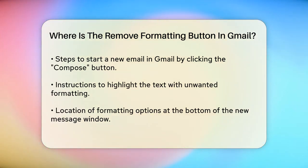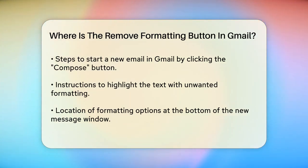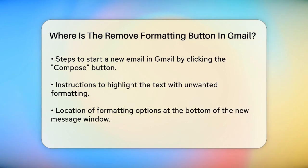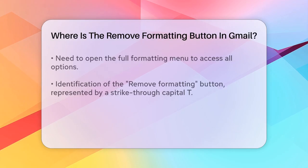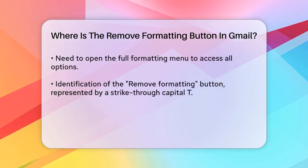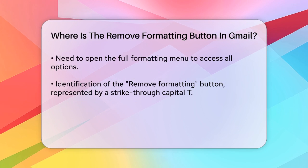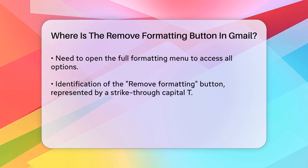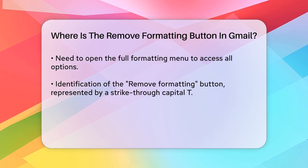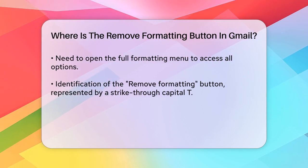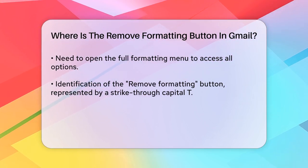Next, look at the bottom of the New Message window where you'll see various formatting options like Bold, Italic, and Underline. You might need to open the entire formatting menu to see all the options. Once you've opened the menu, you'll find the Remove Formatting button — it looks like a strikethrough capital T.